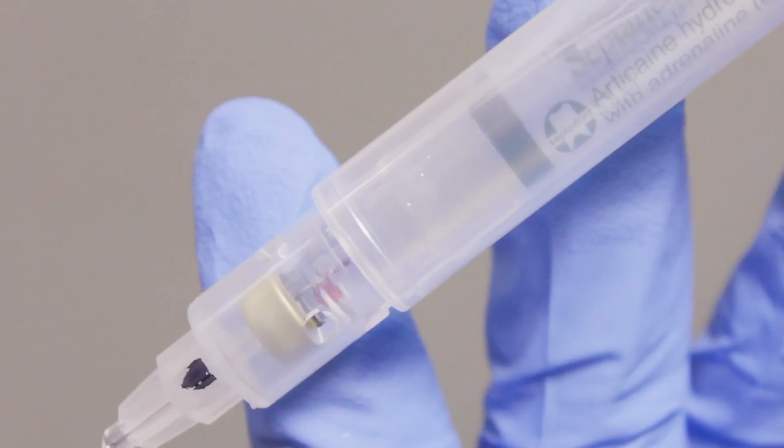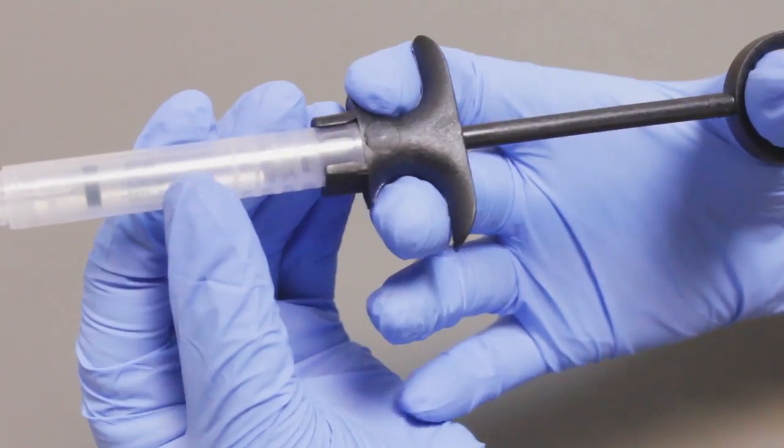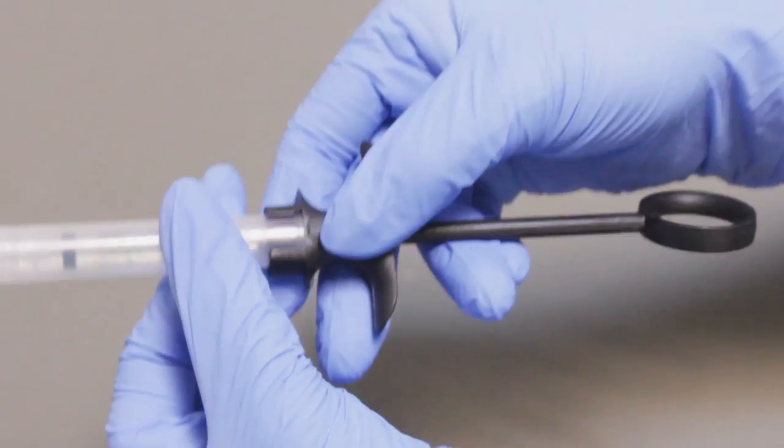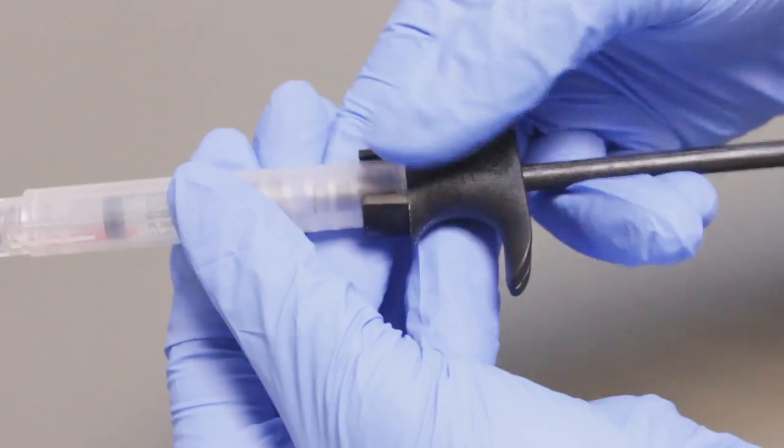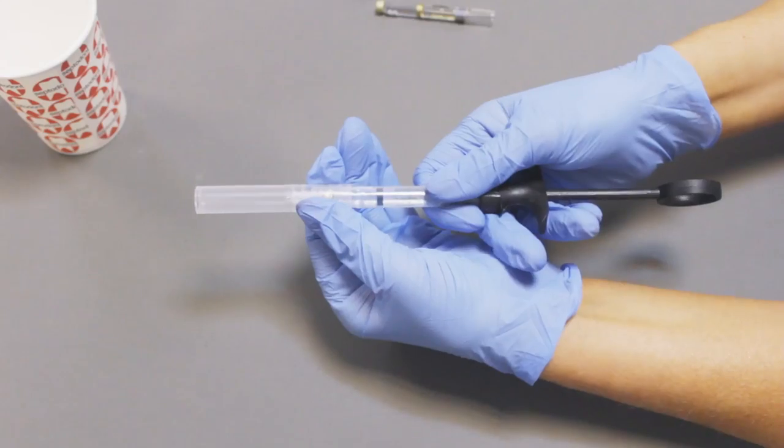Release your hand from the handle. You only hold the handle when performing the injection. Place your thumb and forefinger on the finger grips and with your other hand carefully pull the protective sheath into the holding position.